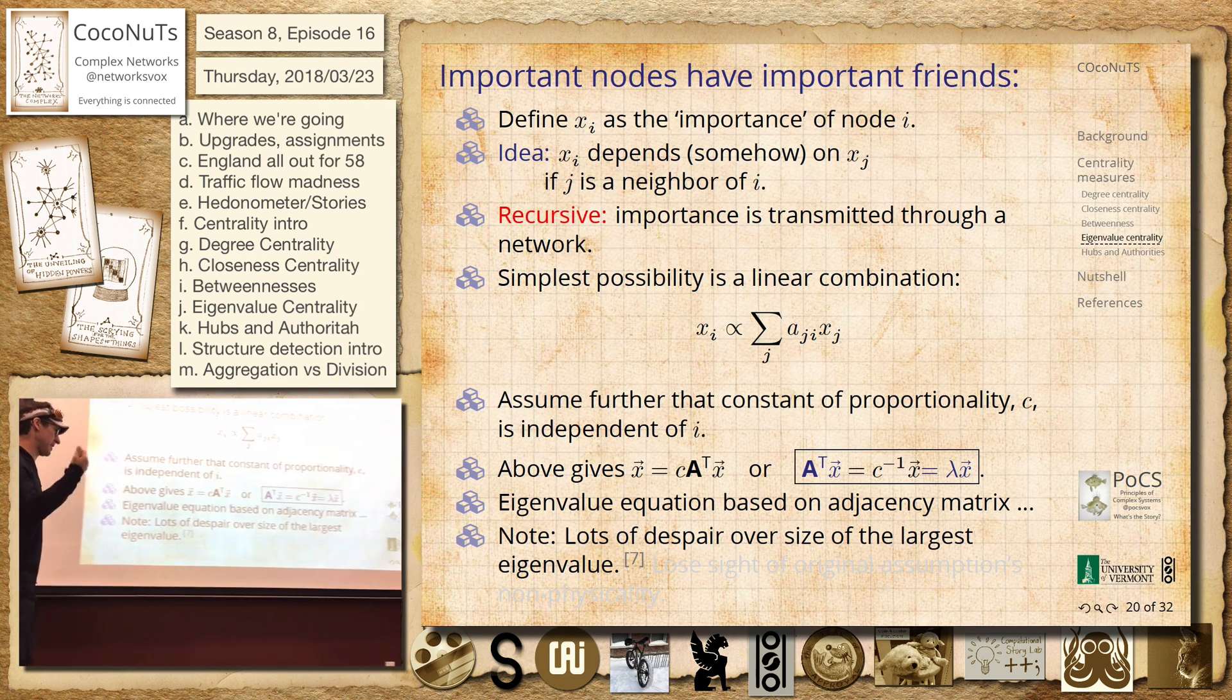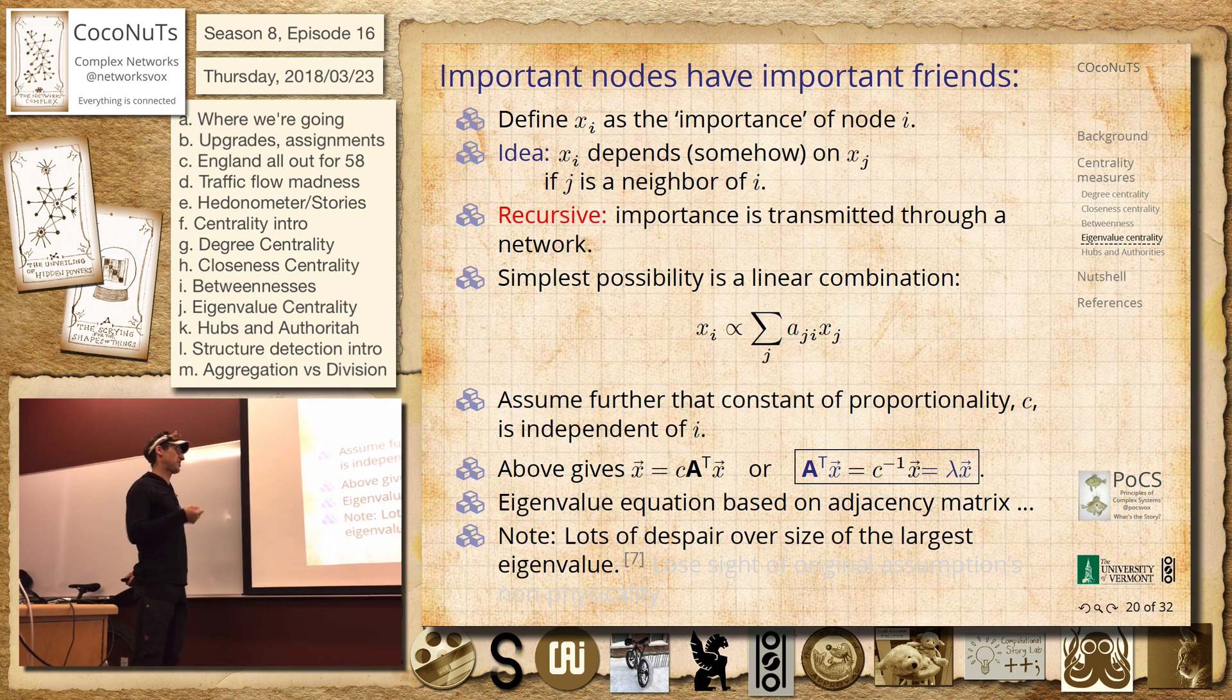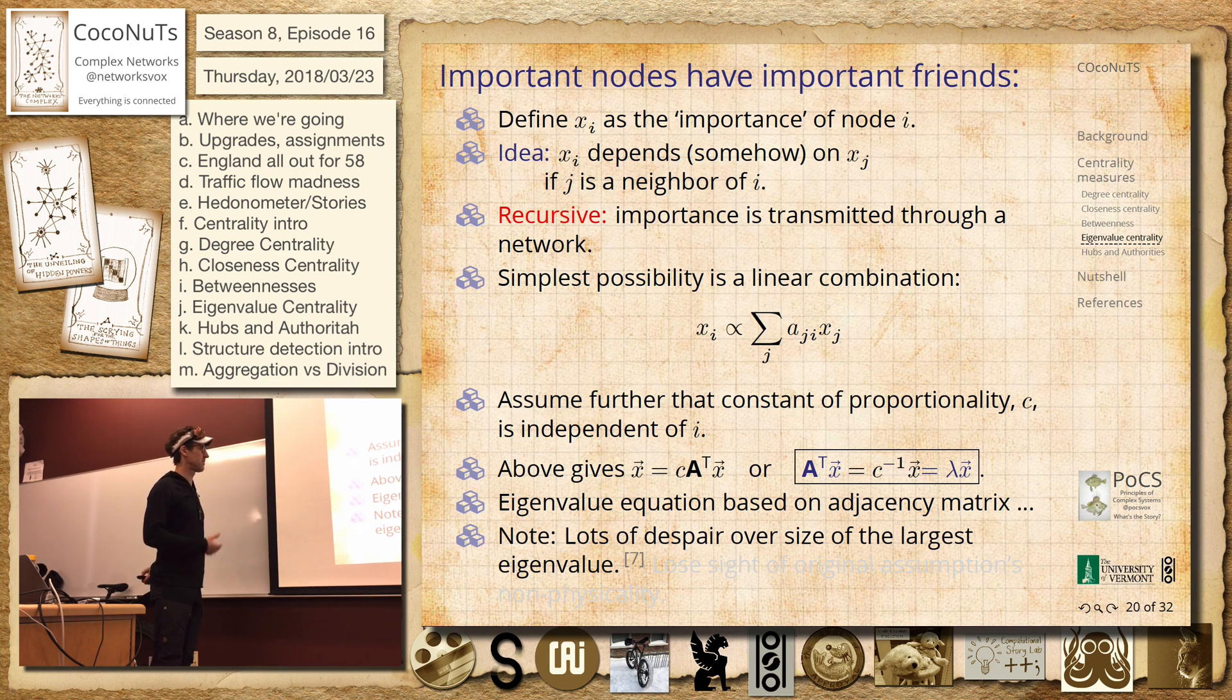And if you kept multiplying by A transpose, you'd get lambda squared, lambda cubed. So there's a sense that you would take the largest one. That seems sort of right, even though you're not really, OK.